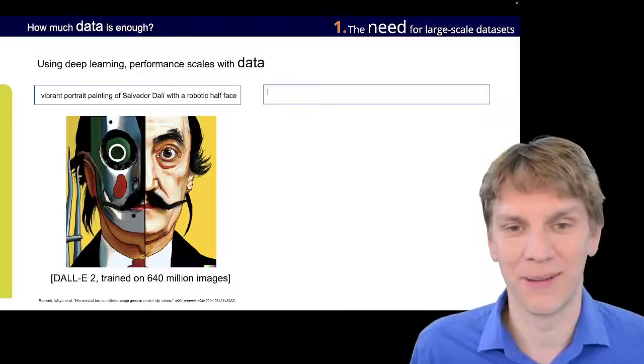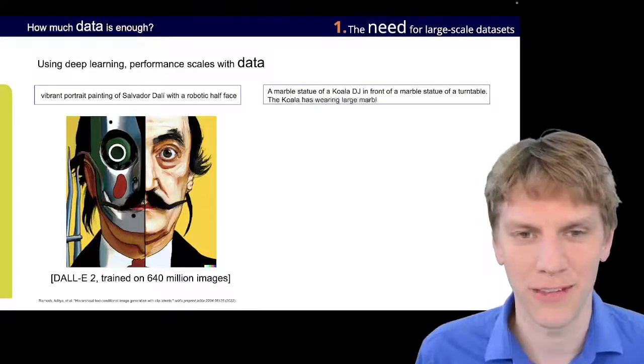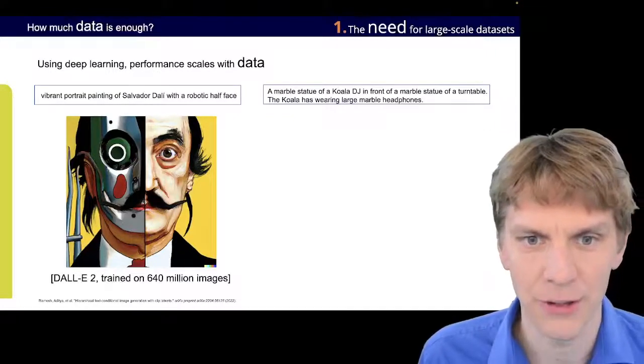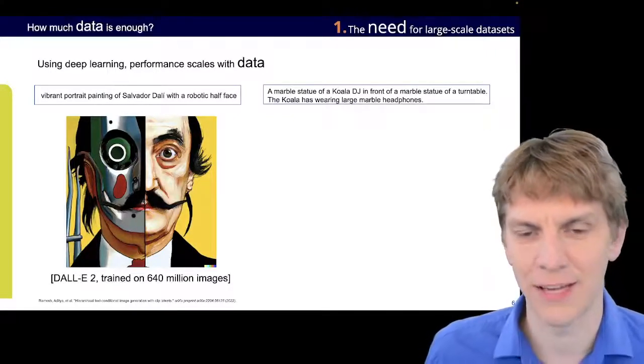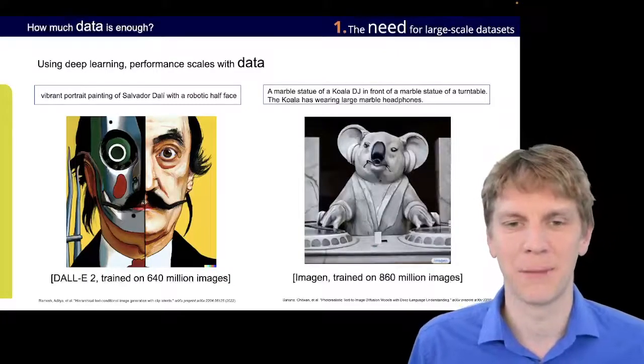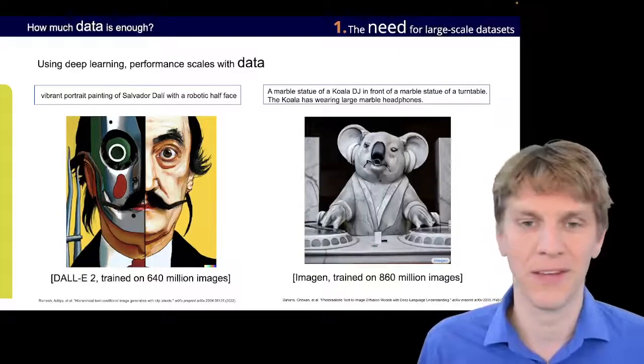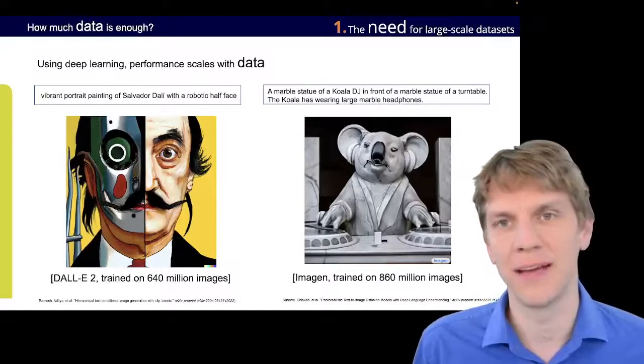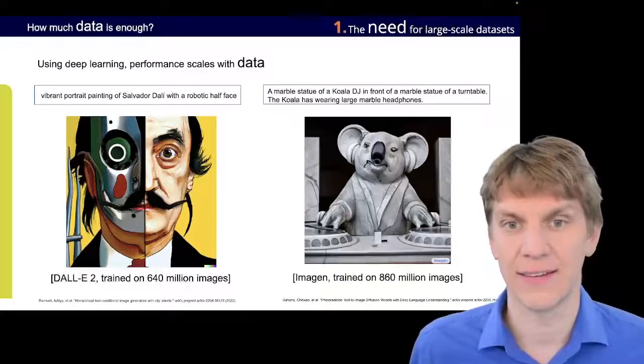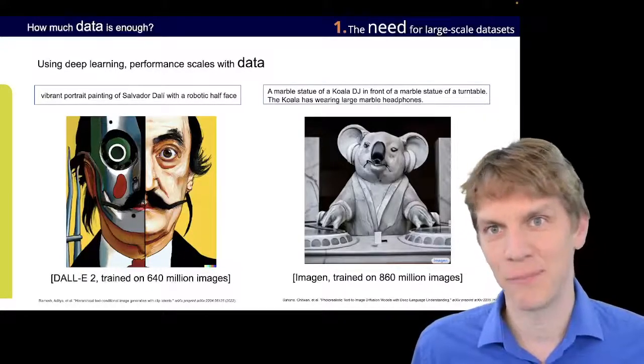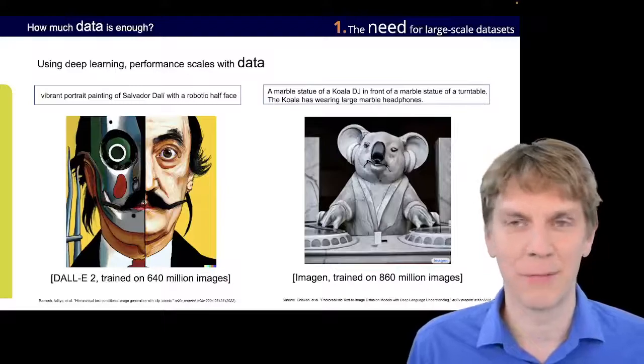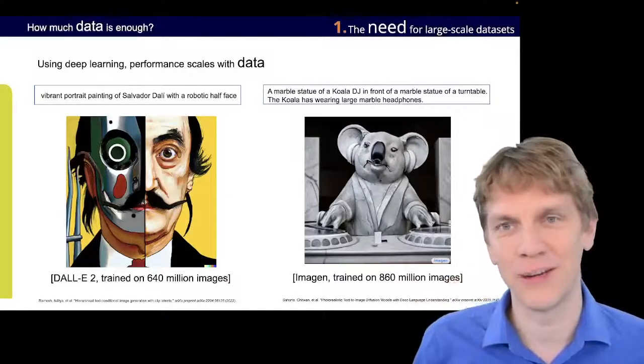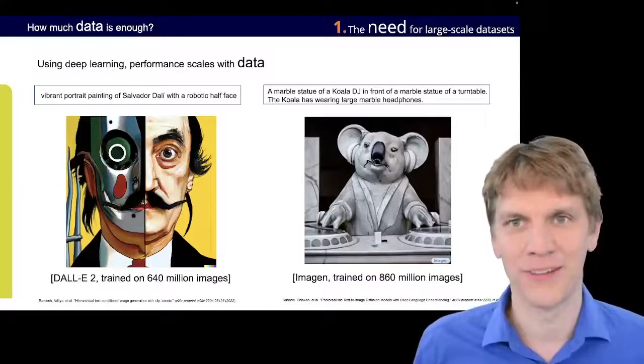Then, or for example, as another example, we can also say, oh, yeah, a marble statue of a koala DJ in front of a marble statue of a turntable. The koala is wearing large marble headphones. And this is one of the prime examples of Imagen of the Google team. So we can see that there's quite something happening here, and all of this depends on large-scale datasets. And as a fun fact, also all the drawings that I have in my presentation were generated by a really smaller version of DALL-E called DALL-E Mini, which you can find on the internet nowadays.